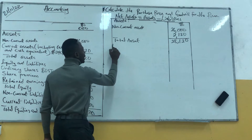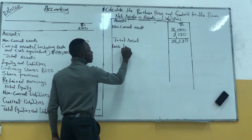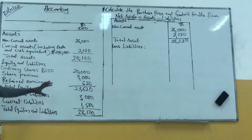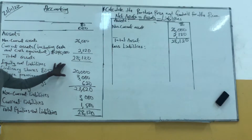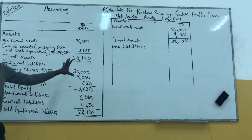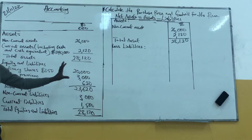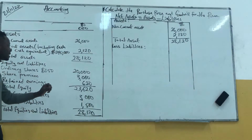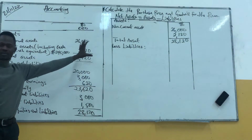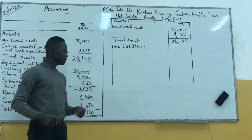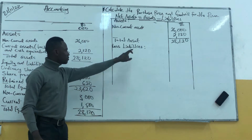Now let's look at liabilities. From this information, I already told you that a firm has its assets, its liabilities, and its capital to make up the balance sheet or the statement of financial position. But right now, what we need to find is the net assets, which is the purchase price. To get the purchase price, assets minus liabilities. So now we have the assets — we need to find the liabilities.